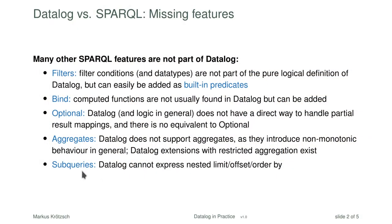Interestingly, Datalog cannot have subqueries in the SPARQL sense. You can embed sub-Datalog queries by simply adding the rules that give you an intermediate result to a new query and continuing from there. But what you do not have in Datalog is limit, offset, or order-by on the results of subqueries. So getting the ten largest cities and then finding all universities in those cities, as we did in SPARQL, is something you cannot do with Datalog, and there are not commonly studied extensions that would support this in a natural way, even though it is quite useful in practice.